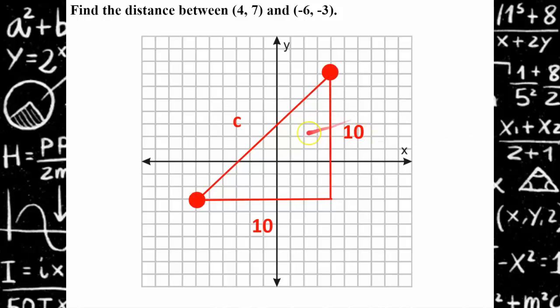So here I've plotted (4, 7) and (-6, -3). I found the length of both legs, which is 10 and 10, and I'm looking for that diagonal distance c, the hypotenuse.